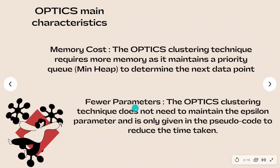The most important features of the algorithm are: number one, its memory costs, because OPTICS algorithm requires more memory than other similar algorithms, and this is because it keeps a priority queue to know which is the next data point. And number two, OPTICS uses a few parameters because it does not require maintaining the epsilon parameter, which in addition is only given in the pseudocode to reduce the time taken.